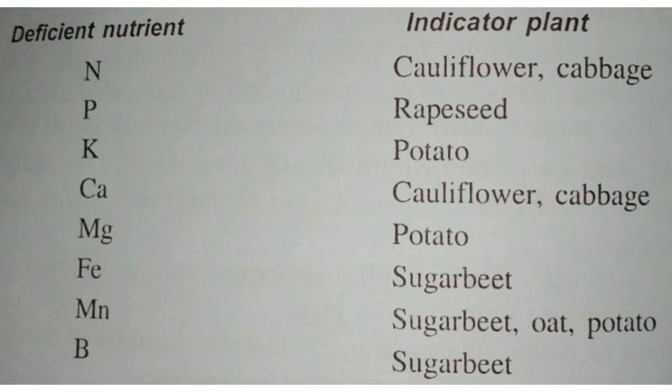MN — Manganese — the indicator plants are sugar beet, oat, and potato. So manganese has sugar beet, oat, and potato as its indicators. Man works hard, so they need energy — that's the memory trick for manganese needing all three plants.